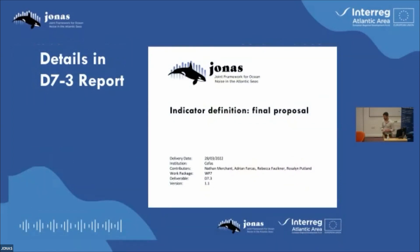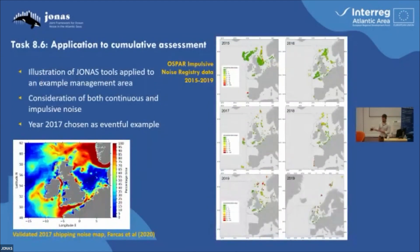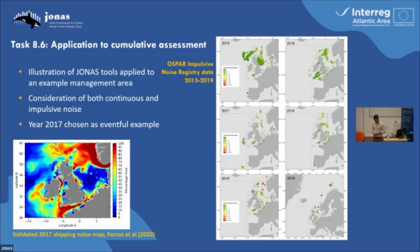All of this is in the D7.3 report. I have a little bit on cumulative stuff: we have a task within Work Package 8, which is to look at a cumulative assessment of a particular area, bringing in impulsive noise as well as continuous noise and looking at how we might present that information to a manager. So using the same continuous noise data as before, but bringing in this impulsive noise data.